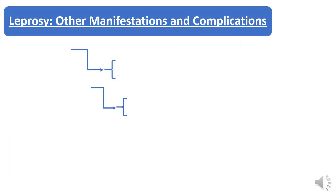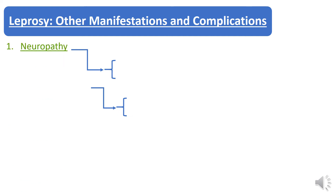Leprosy complications: the first complication that comes in leprosy patients is neuropathy. When a patient presents, the first finding is sensory loss — the patient has reduced sensation in the affected part of the body.